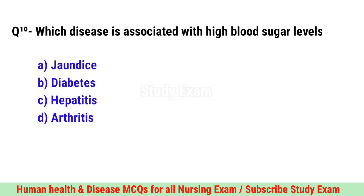Question No. 10. Which disease is associated with high blood sugar levels? Correct option is B. Diabetes.